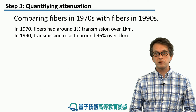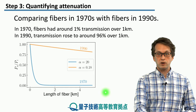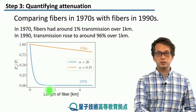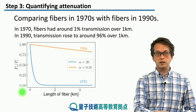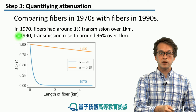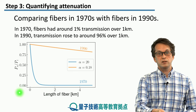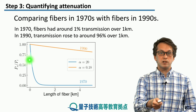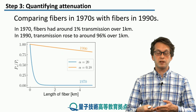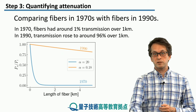Let's plot these two values to see what they look like. On the horizontal axis we are plotting the length of the fiber through which our signal is traveling, and on the vertical axis we have the ratio of power out over power in. If the length of the fiber is 0, then of course the ratio is 1 — our signal hasn't traveled at all, so it had no chance to be attenuated.